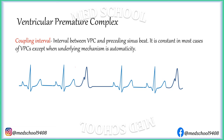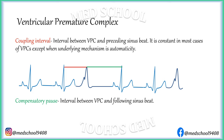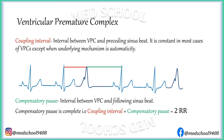In case of Ventricular Premature Complex, the Coupling Interval is the interval between VPC and the preceding sinus beat. It is constant in most cases of VPCs, except when the underlying mechanism is automaticity. Compensatory Pause is the interval between VPC and the following sinus beat. In VPCs, the compensatory pause is complete — that is, Coupling Interval plus Compensatory Pause equals 2 times the RR Interval — meaning the compensatory pause completely offsets the prematurity of VPC.